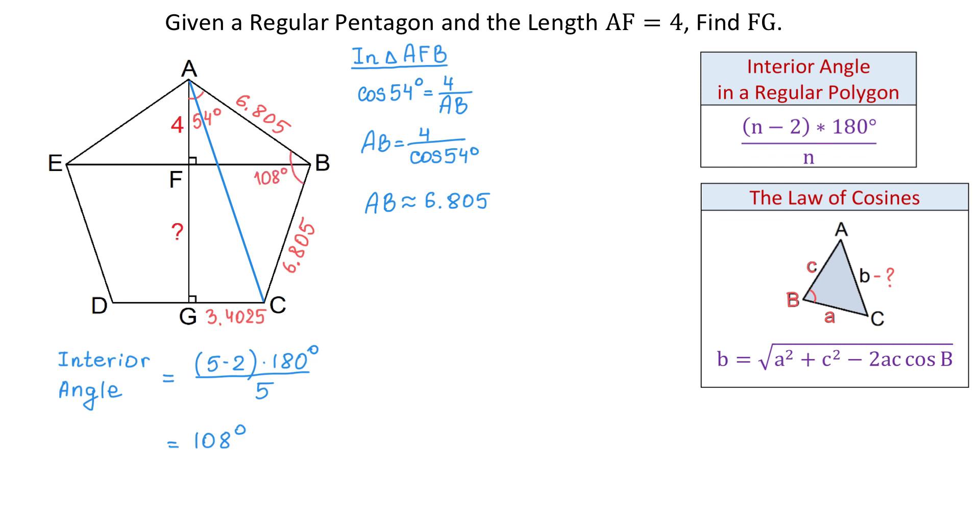Now, we will use the law of cosines to find the side AC that is opposite of angle B. So then, AC equals square root of 6.805 squared plus 6.805 squared minus 2 times 6.805 times another 6.805 and times cosine of 108 degrees. Then, AC is approximately 11.0107.